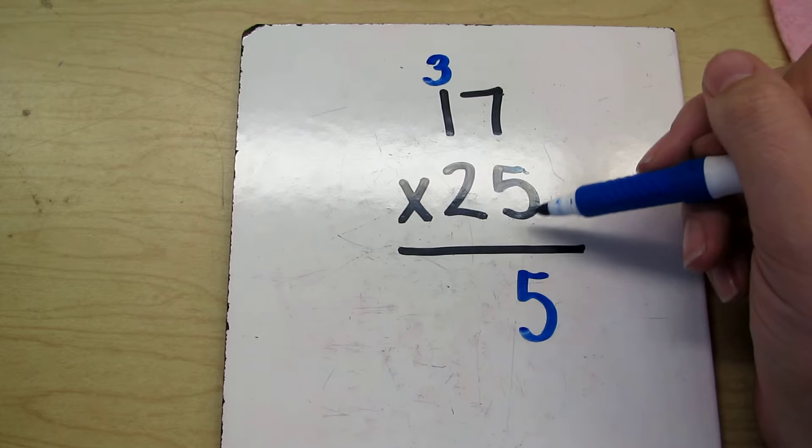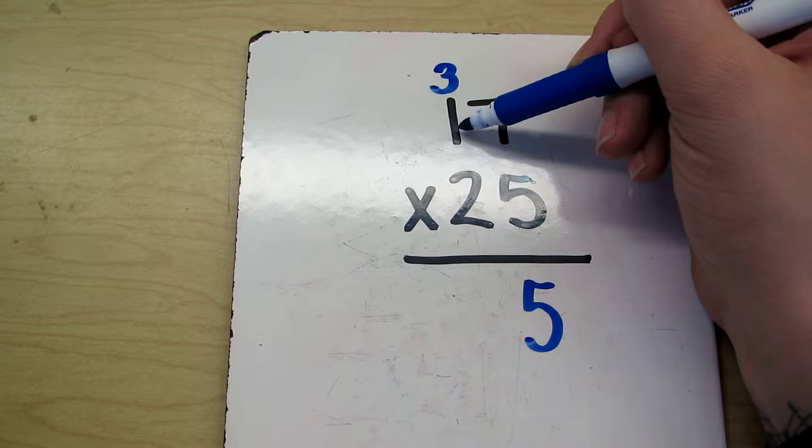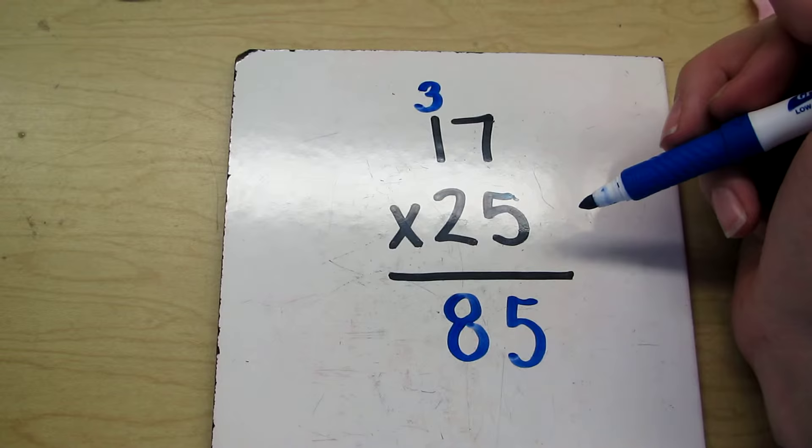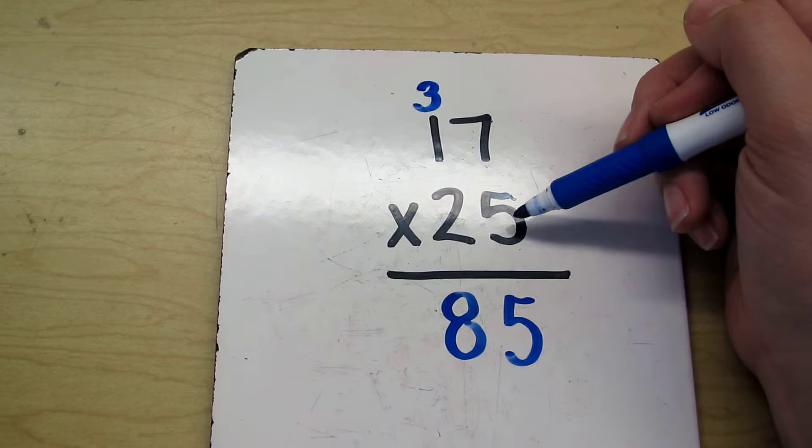Okay, then we're still working with our ones. So we're doing 5 times 1, which is 5, plus 3, which is 8. So 5 times 1 is 5, plus 3 is 8. So now this means that I'm finished working with my ones. If you remember the base 10 blocks, technically what we just did was 5 times 17 gave us 85. So we're finished working with it.